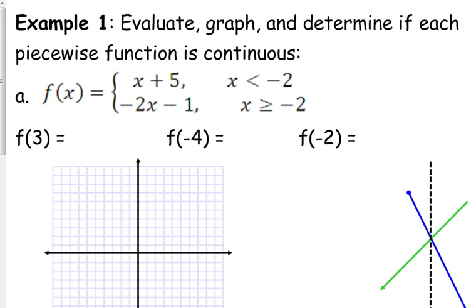Let's graph these piecewise functions. We have a piecewise function defined as x plus 5 when x is less than negative 2, so to the left of negative 2, and it is defined as negative 2x minus 1 when x is greater than negative 2, so to the right of x equals negative 2.